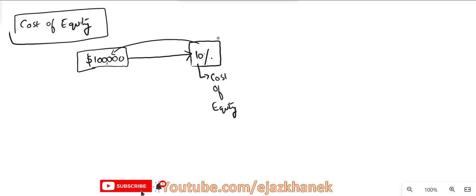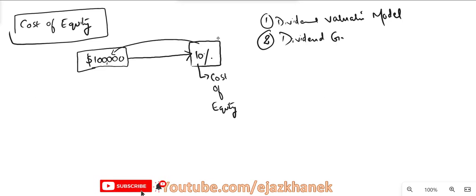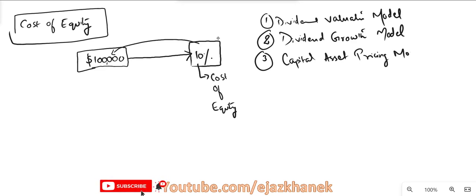We have different models through which we calculate cost of equity. One is called the dividend valuation model. Second one is the dividend growth model. And the third one is the capital asset pricing model, CAPM in short. So there are three ways through which we calculate cost of equity of the company. Let us first discuss the first model, that is the dividend valuation model.